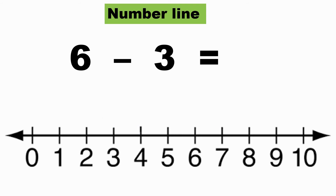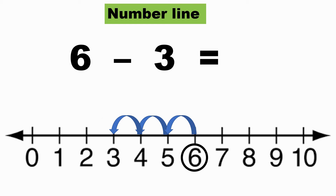What is six minus three? I start with six and jump to the left three times: one, two, three. I come to three. So six minus three gives me three. Three is the difference. I am not skipping any number — I come to the number just before the previous number in every jump.